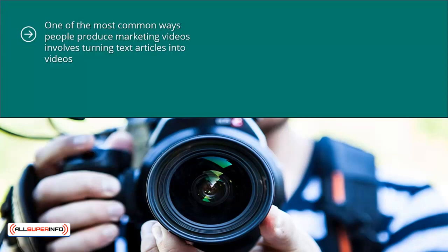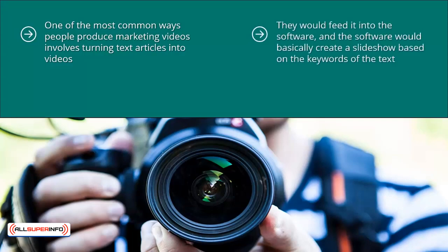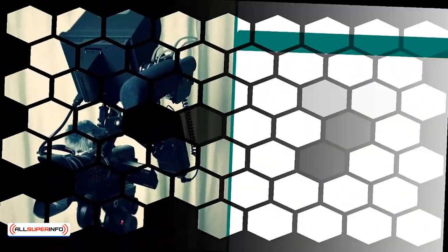Basically, they would take an article that they wrote — maybe it's a blog post, perhaps it's a resource article. They would feed it into the software, and the software would create a slideshow based on the keywords of the text. There is an editorial manual override where you look at the pictures that got associated and can switch things around. Still, it is a video slideshow — you get text scrolling at the bottom and some images, with the software pairing graphics with your text.